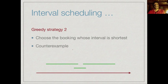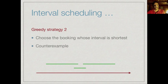Another greedy strategy is to choose the booking whose interval is shortest. Here is a counter-example: the interval in the middle is the shortest, but choosing it conflicts with both other bookings, so we can only allocate one teacher. Whereas if we ignore that strategy and choose the two longer non-conflicting intervals, we can use the room for two teachers and get a better optimum.